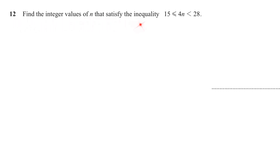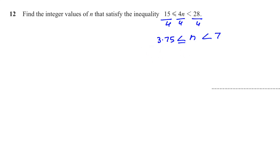Question number twelve: find the integer values of n that satisfy the inequality. Divide all parts by 4: 15 divided by 4 gives 3.75, and 28 divided by 4 gives 7. So we have 3.75 ≤ n < 7. Integer means positive or negative whole numbers, so decimals are excluded. The integers are 4, 5, and 6 — we cannot include 7 because n is strictly less than 7.